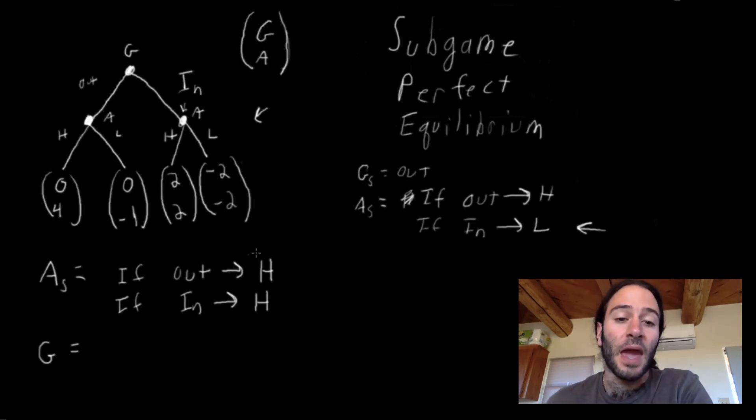Now we look at Google keeping Apple strategy constant at what we decided was rational for Apple to do in each of the decision nodes. So now Google says, if I play out, what do I earn? Well, if Google plays out, Apple would play H and Google would get zero. If Google were to play in, it knows that Apple would play H because we already said H is what Apple would do if it got to the state where Google played in, and Google would get a reward of two. Because two is better than zero, Google would actually play in.